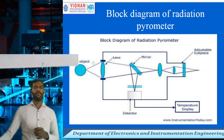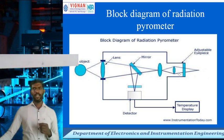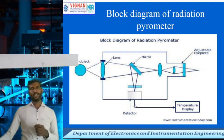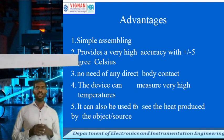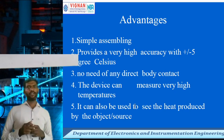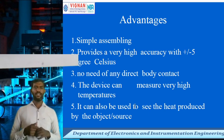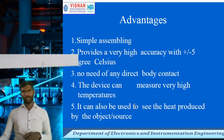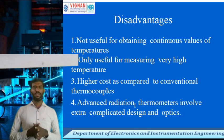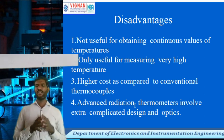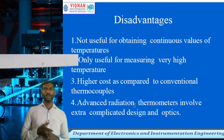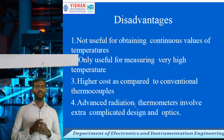The block diagram of the selective radiation pyrometer includes a hot object, lenses, mirrors, and adjustable eyepieces. The temperature is displayed via a detector that receives the different radiation signals. Advantages: simple assembly, accuracy of plus or minus 5, no direct contact with the body required, and the device can measure very high temperatures. Disadvantages: not useful for obtaining continuous variance of temperature, only useful for measuring very high temperatures, higher cost compared to conventional thermometers, and advanced radiation thermometers involve extra complicated design and optics.